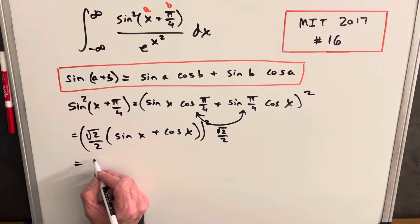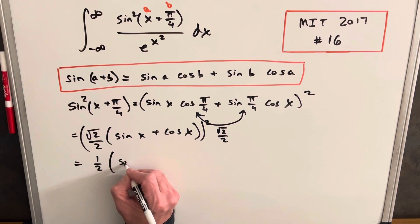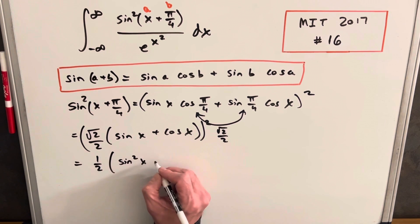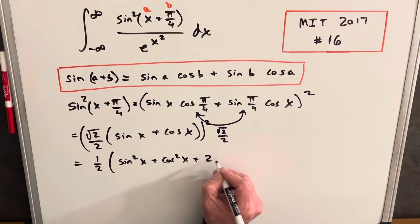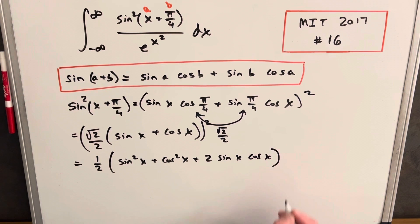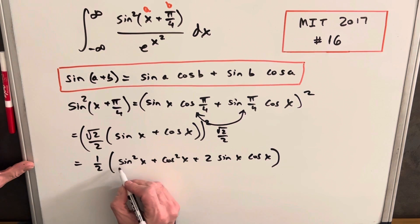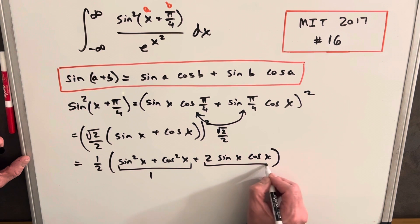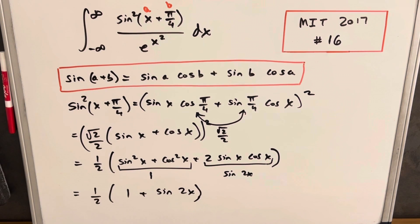This piece is going to be squaring this, it's going to be a half. And then in the parentheses we're going to have sine squared x plus cosine squared x plus 2 sine x cos x. And this is actually pretty nice because we know that this is just one, and we also can rewrite this piece here as sine of 2x using double angle formula.